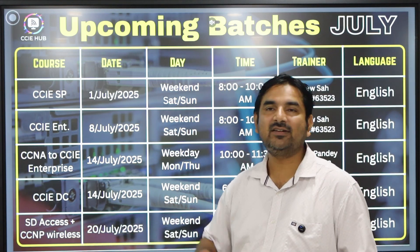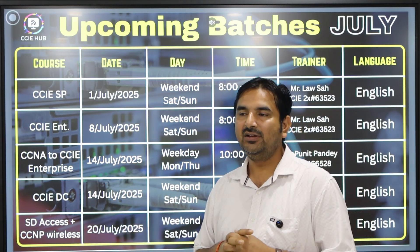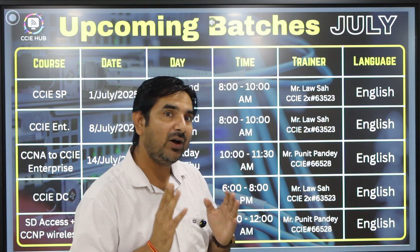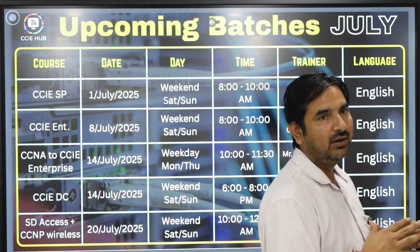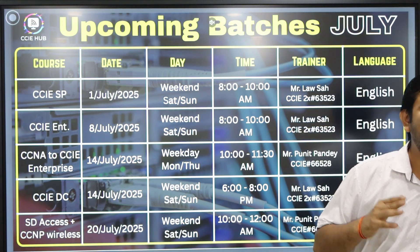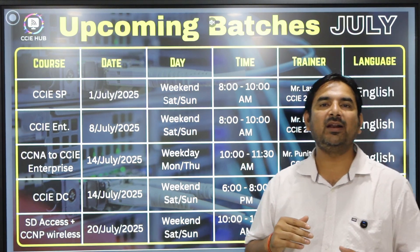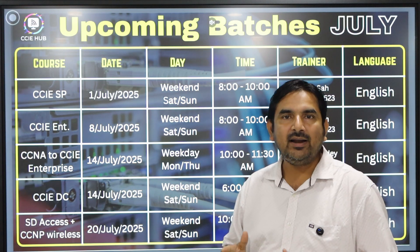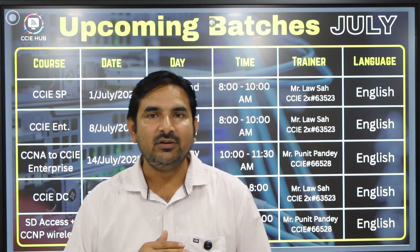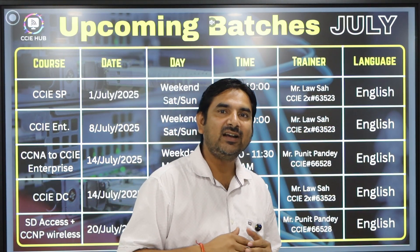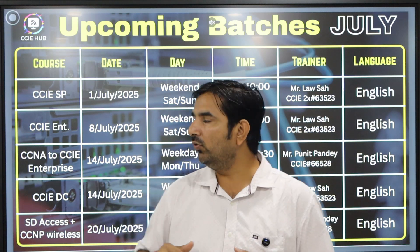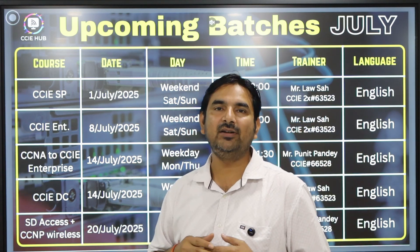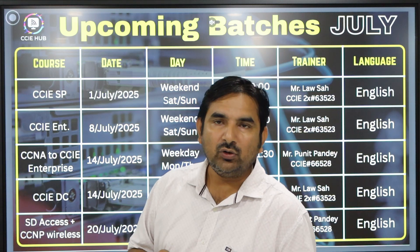After the CCIE Data Center batch, the next batch is SD Access and CCNP Wireless. Nowadays most things run on wireless technology — the 80/20 combination is going on in the market, meaning 20 percent of things are on wired and 80 percent on wireless. The SD Access batch will cover wireless, SD Access, and how to automate your network.